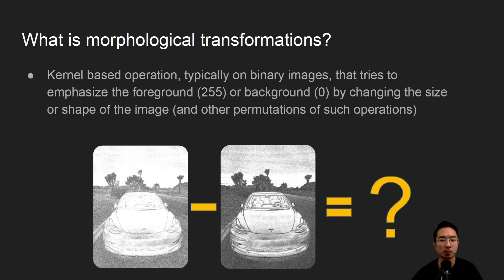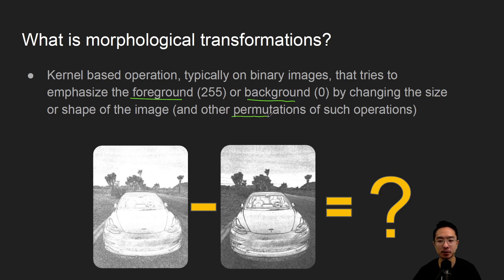So what is morphological transformation? It's a kernel-based operation, typically on binary images, and what it's going to try to do is emphasize either the foreground or the background by changing the size or shape of the image. There are also different permutations of these operations, so we'll see how combining the different operations will do different things.